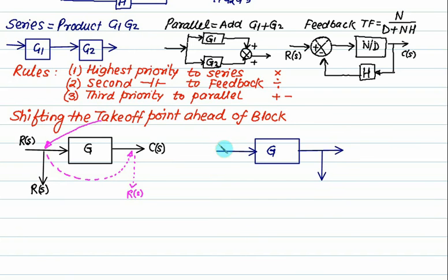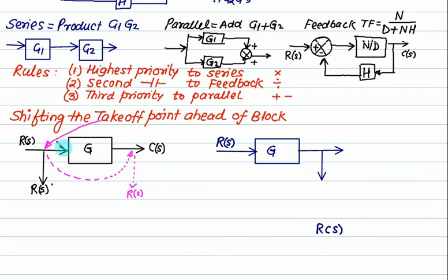This one is same as R of S. The original value of this takeoff point is R of S, and after modification also I should get R of S — so that care has to be taken, then only the modification is perfect. Now this one is C of S. So from this figure, C of S equals R of S multiplied by G. So this one is G multiplied by R of S. Is this value equal to C of S? Yes. And is it the same as the original value?